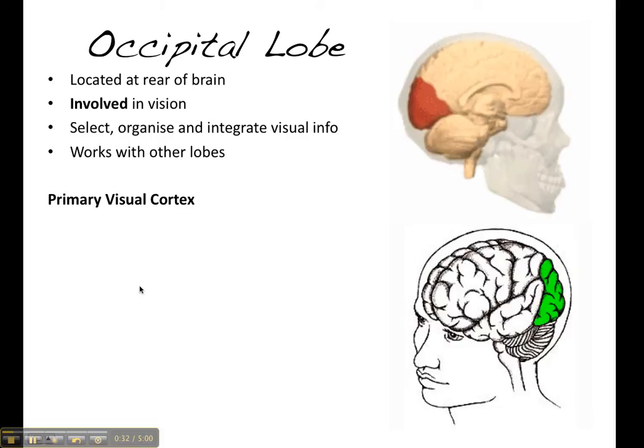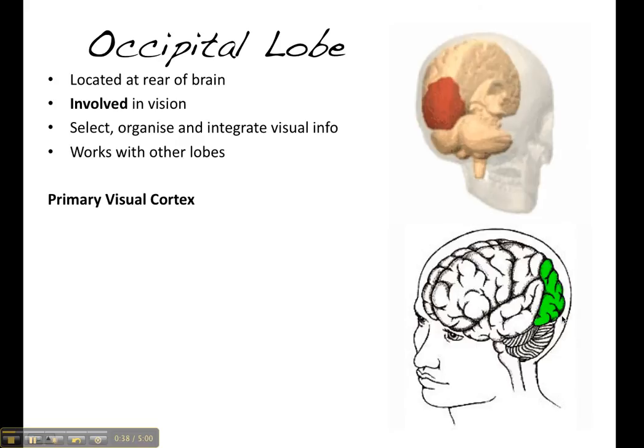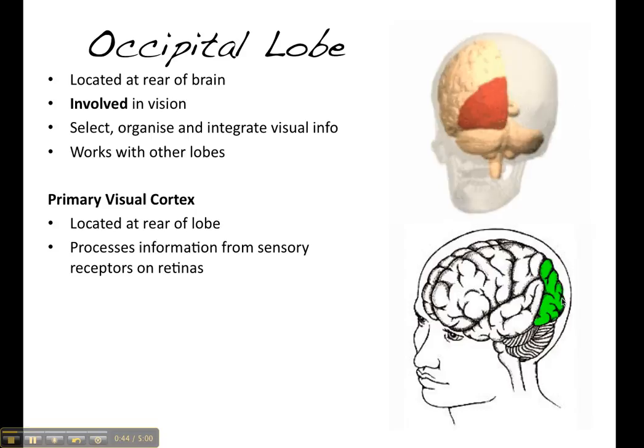Right at the very back of the occipital lobe is where we find the primary visual cortex, which is where the visual information goes to first. The primary visual cortex processes information from the sensory receptors on the retina, so it's processing visual information.